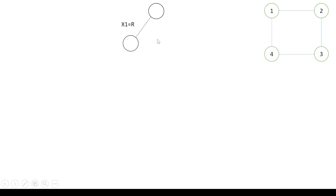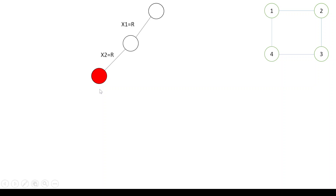There are three options for node 2. Even for node 1 we had three options — red, green, and blue — and we started with red. Now for node 2, let's start with red. If we give red to node 2, there is a conflict — it violates the constraint that neighboring nodes should not have the same color. Since x1 is red and x2 is also red, we backtrack and choose the second option: x2 equals green.